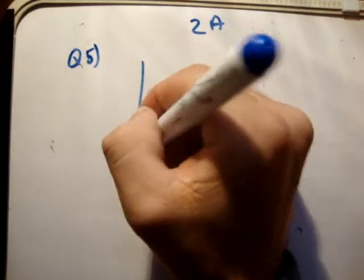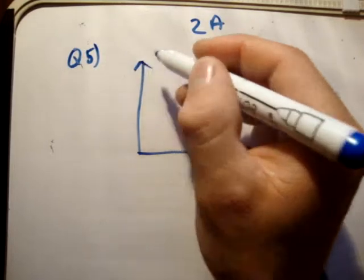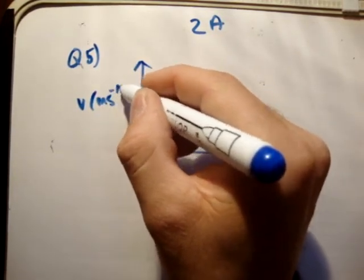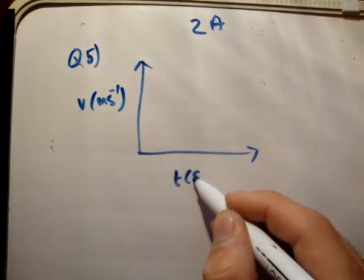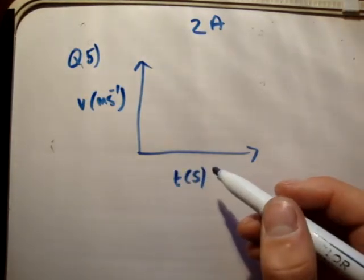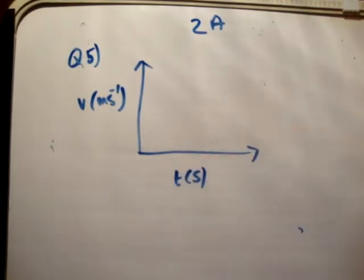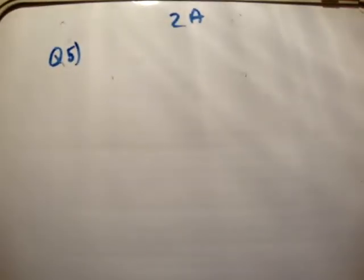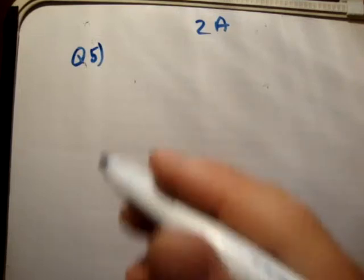So what do we do first? We begin by drawing our graph. We have speed in meters per second and time in seconds. We don't really know anything else, so we can't really graph anything. That was kind of pointless. Let me clean that up. So we go straight into it.